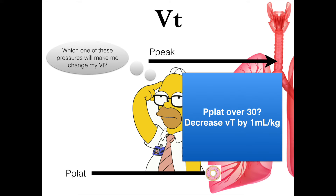If we get too high of a reading — say over 30 — there's a high likelihood that we could cause injury to the lungs. We'd want to decrease by one milliliter per kilogram of tidal volume. Keep in mind that is not total body weight; that is ideal body weight. We'll talk about how to calculate ideal body weight in another video, but it goes by height and not by total body weight.